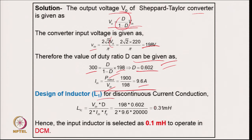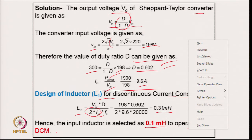For the input inductor design in discontinuous current mode, the critical value corresponding to twice the ripple current is 0.31 mH. The input inductor is selected much lower than this to ensure DCM under all operating conditions, and 0.1 mH is selected for operating in discontinuous mode.